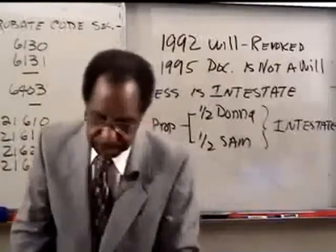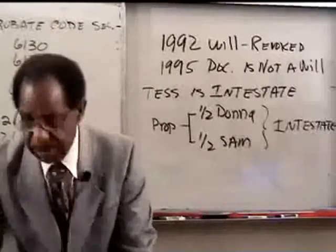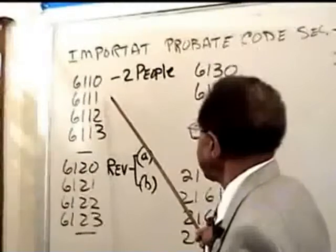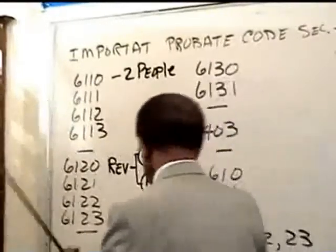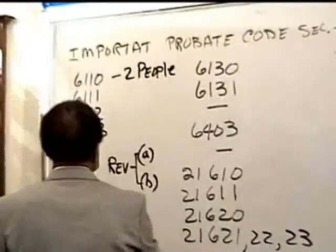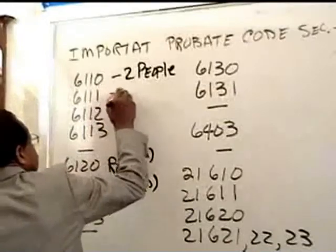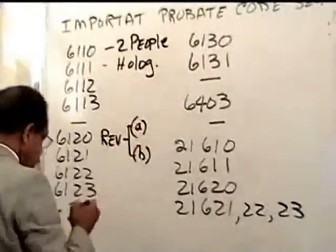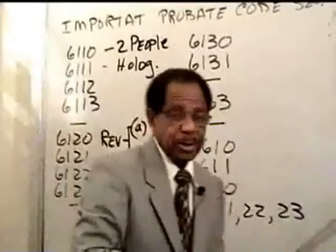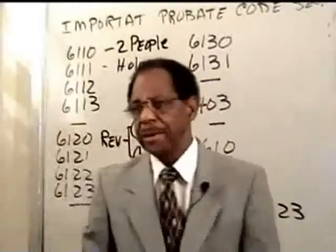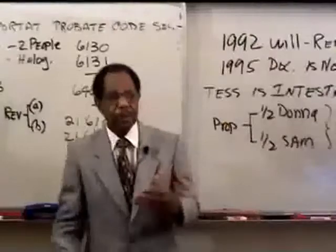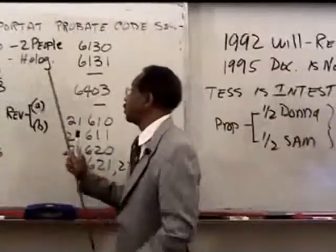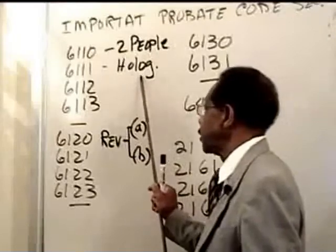Section 6110 tells you how to execute a will. Section 6111 tells you about a holographic will — and you do need to know about holographic wills. Read the whole section carefully because §6111 has some subtle points about what to do when there's no date on the holographic will. Please don't just take this in general — please take a look at what it says.